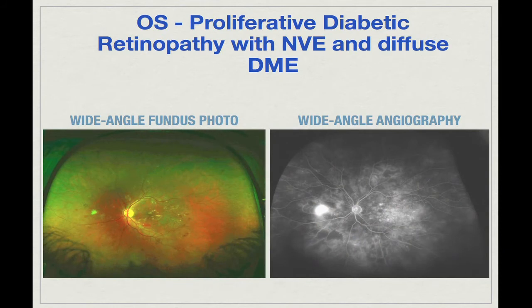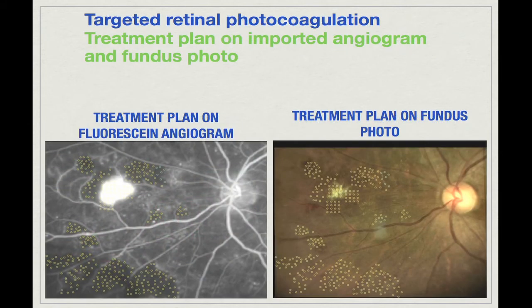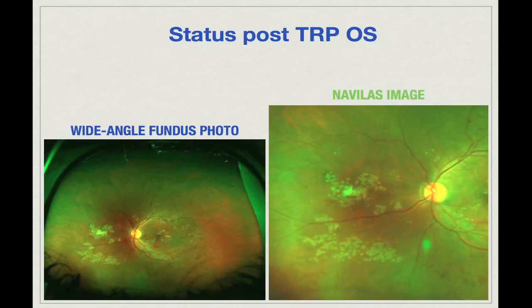Here is another example: a wide-angle photo and wide-angle angiography showing macular edema and neovascularization nasal to the optic disc. On the left in the blow-up image, we see the fluorescein angiogram with the created treatment plan. The yellow spots indicate the areas where we will treat, precisely targeting the areas of non-perfusion and also the area of neovascularization. On the left we see the wide-angle post-laser image, and the blow-up confirms very precise treatment only to the areas of pathology.